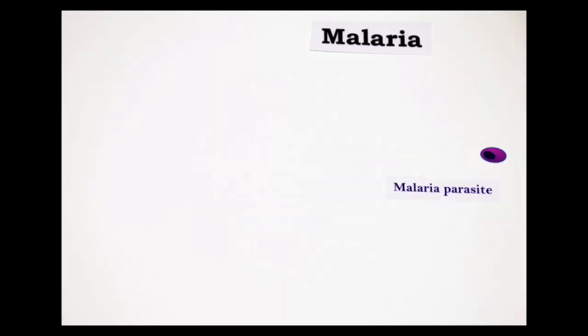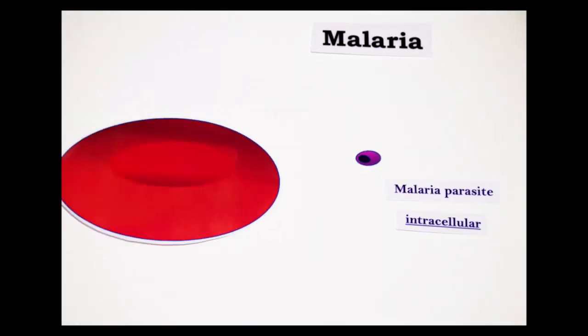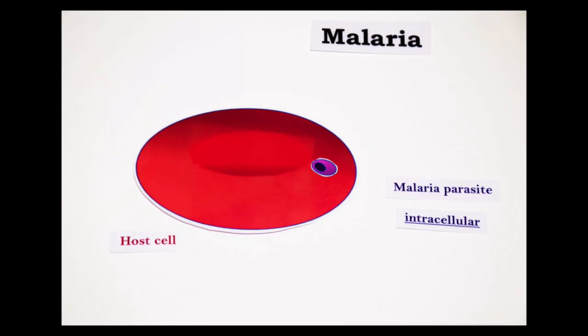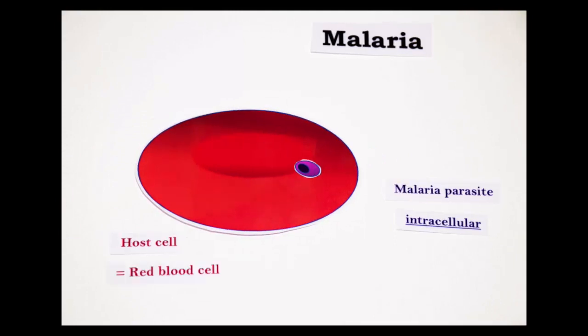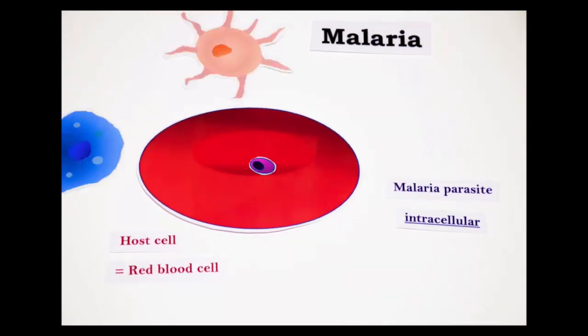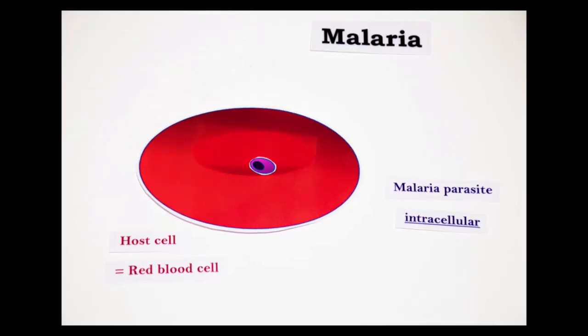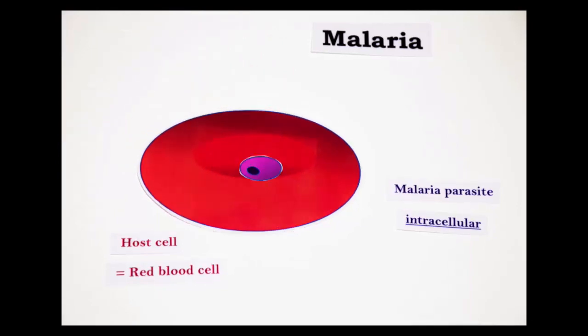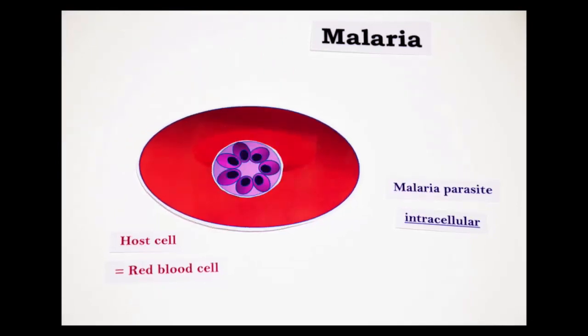The malaria parasite is intracellular, which means it lives inside a host cell — more precisely, a red blood cell. This allows the parasite to hide from the immunity army, to get food, grow and multiply.